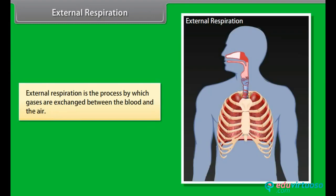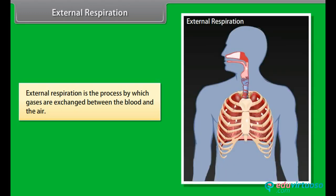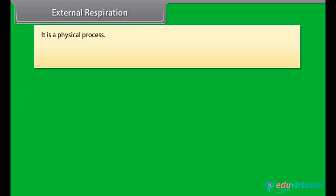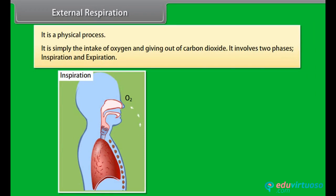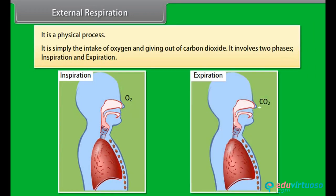External respiration is the process by which gases are exchanged between the blood and the air. It is a physical process — simply the intake of oxygen and giving out of carbon dioxide. It involves two phases: inspiration and expiration.